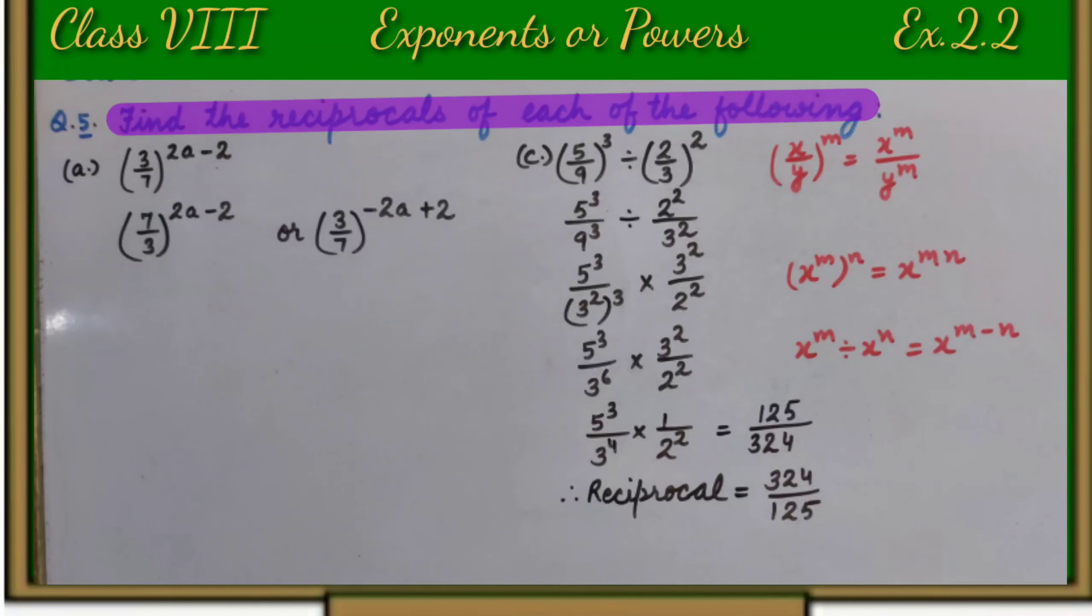Find the reciprocals of each of the following. Part a: 3 upon 7 whole raise to power 2a minus 2.